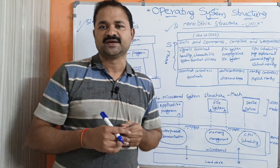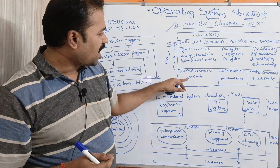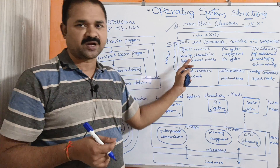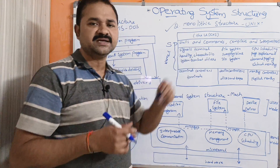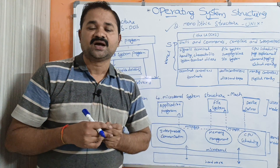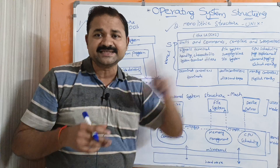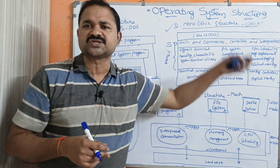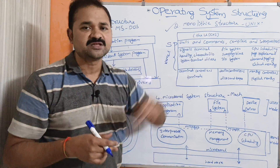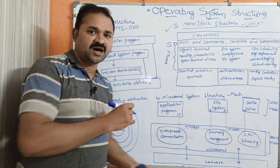So it is very difficult to implement additional components. The kernel resides on top of the hardware and below the system programs. The problem with monolithic structure is that adding extra functionality to the kernel is extremely difficult because the kernel already has too many components. The best example is Unix operating system.